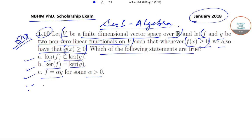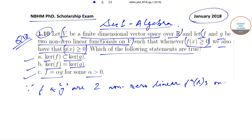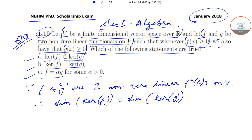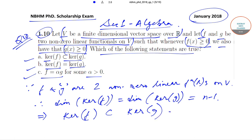Since F and G are two non-zero linear functionals on V, we can write that the dimension of kernel of F equals the dimension of kernel of G, and both are equal to n minus 1. That implies kernel of F is a proper subset of kernel of G, so option A is correct.